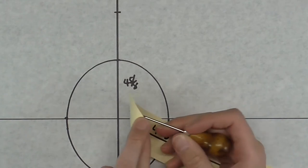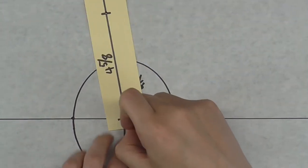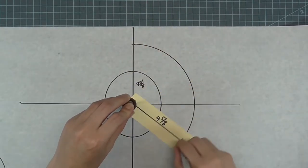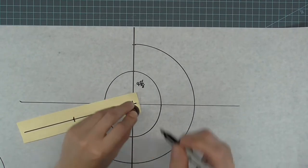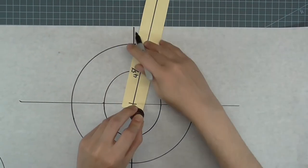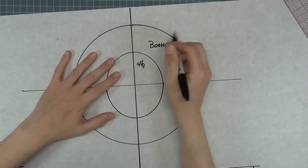With an awl or pushpin, place the small hole at the axis center. Draw a full circle around the template. Label this piece boater brim.